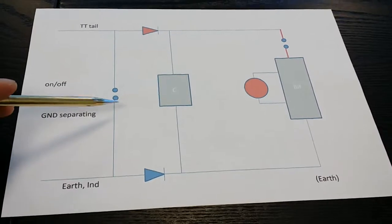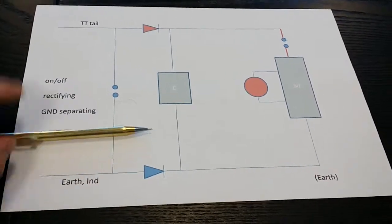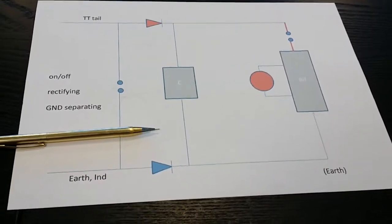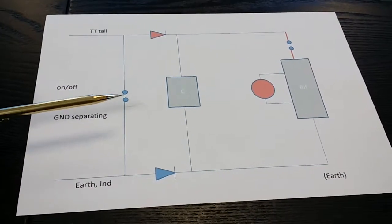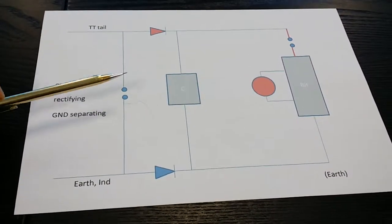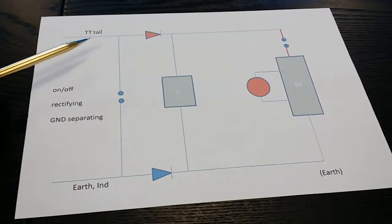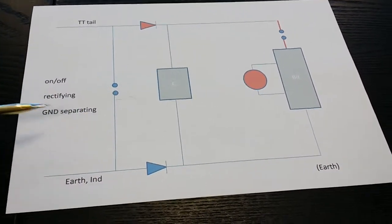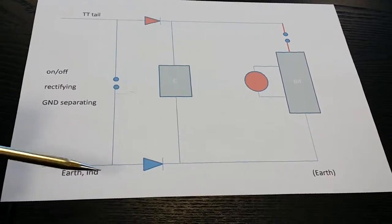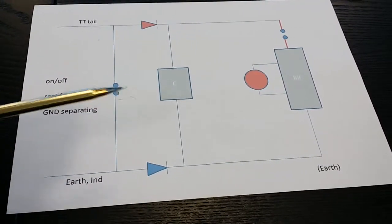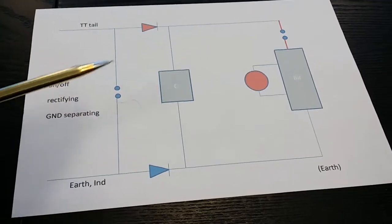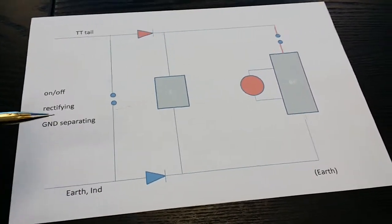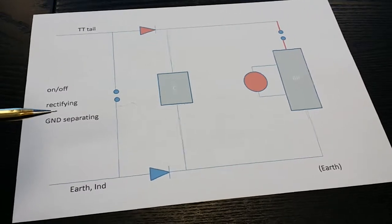On and off, what can you do? You can put some thyristor device there to do on and off, or some relay can do the job. Or you can put the on and off here. And then the rectifying has to be a half bridge, not the full bridge, because you're supposed to accumulate just the half of it, harvest half of it.